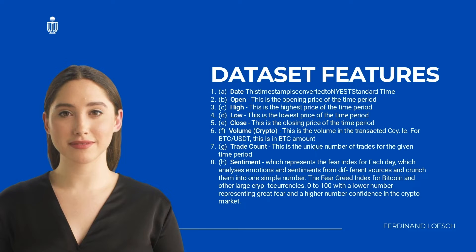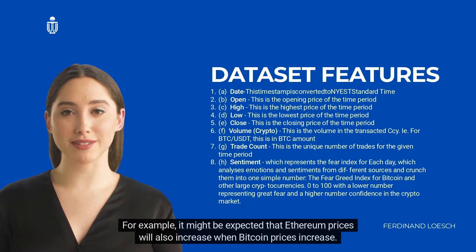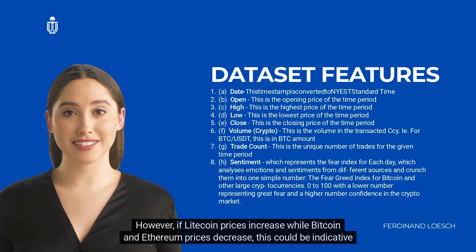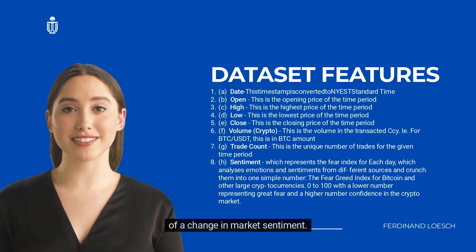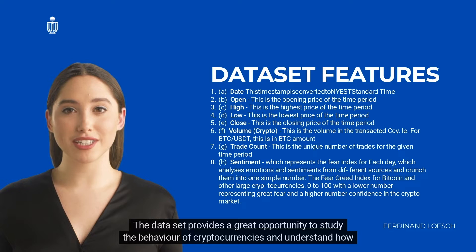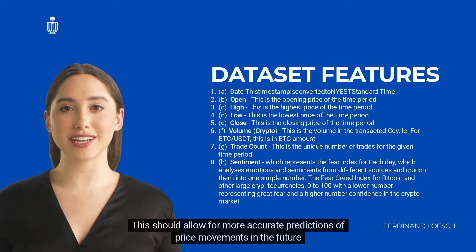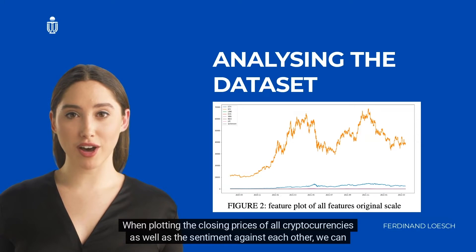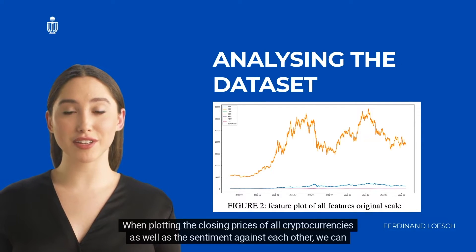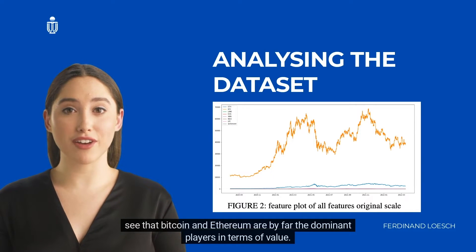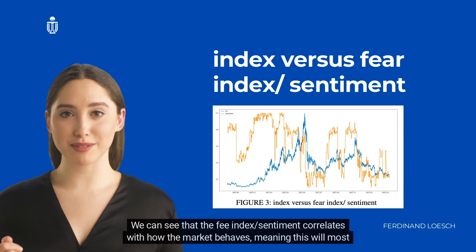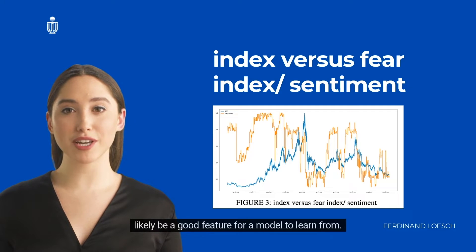The data should also allow discovering relationships between different cryptocurrencies. For example, Ethereum prices might be expected to increase when Bitcoin prices increase. However, if Litecoin prices increase while Bitcoin and Ethereum decrease, this could be indicative of a change in market sentiment. When plotting the closing prices of all cryptocurrencies along with sentiment, we can see that Bitcoin and Ethereum are by far the dominant players in terms of value, and the fear/greed index correlates well with market behavior — making it likely to be a good feature for the model to learn from.